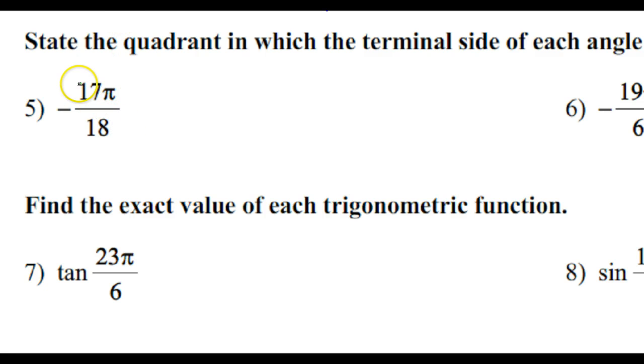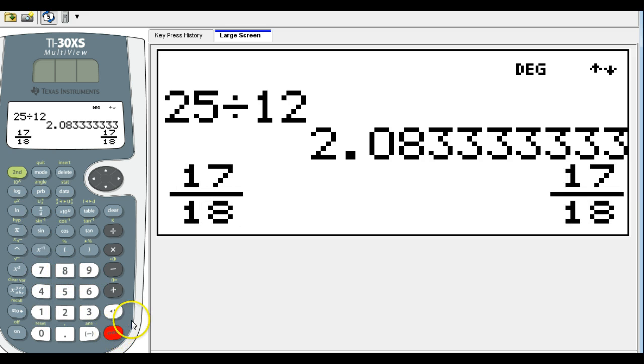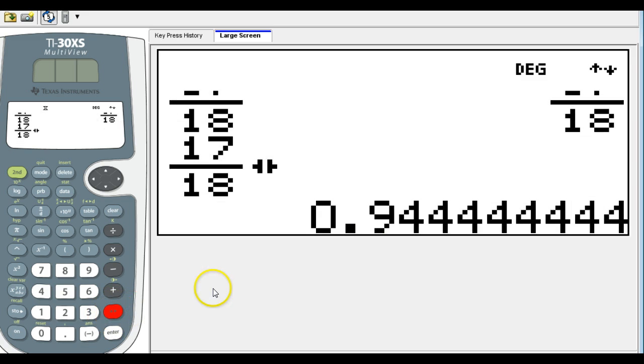It will be very useful to look at the numerical value, the decimal form of the coefficient here. So 17 eighteenths, 17 divided by 18, that is 0.94.